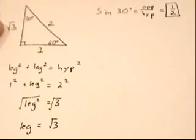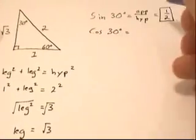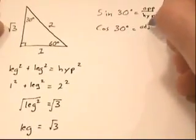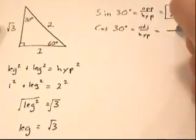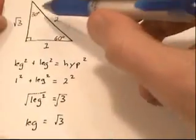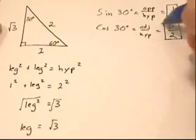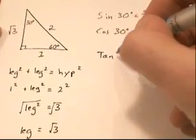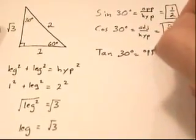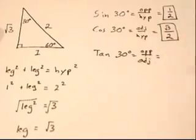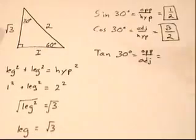Cosine of 30 degrees is adjacent over hypotenuse. The hypotenuse is 2 and the adjacent side is square root of 3, so cosine of 30 degrees equals square root of 3 over 2. Tangent of 30 degrees is opposite over adjacent, so the opposite is 1 and the adjacent is square root of 3, giving us 1 over square root of 3.